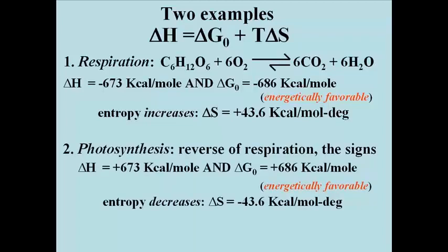Here's photosynthesis again. Delta H here is plus 673 kilocalories per mole of glucose burned, and the standard free energy delta G0 is plus 686 kilocalories per mole of glucose synthesized. T delta S can be solved, or intuited, to be 43.6 kilocalories per mole degree. Now it looks like photosynthesis is occurring with a decrease in entropy—a negative 43.6 kilocalories per mole degree.